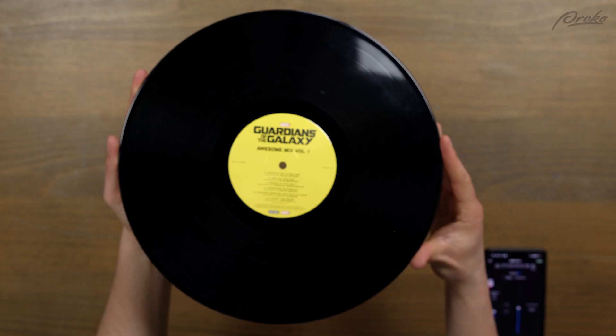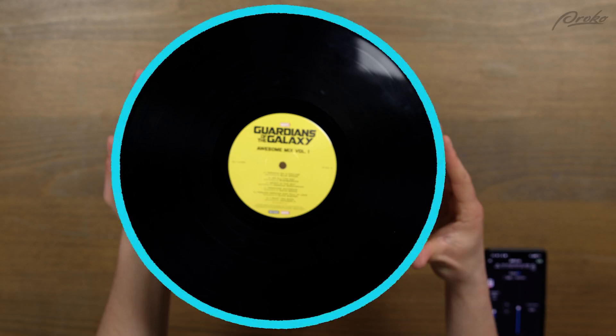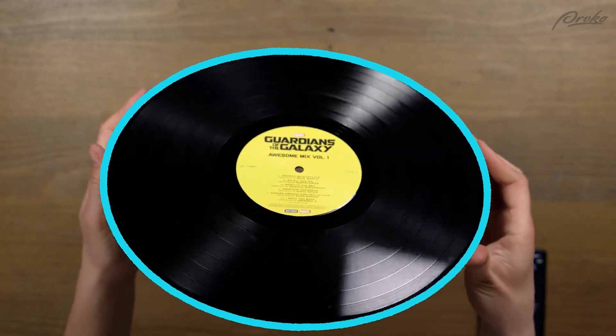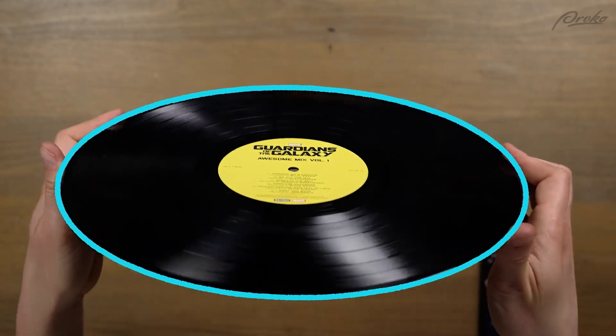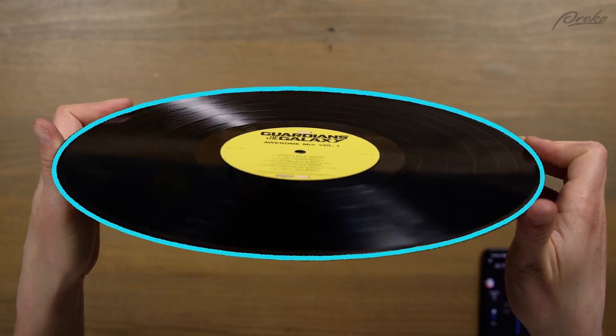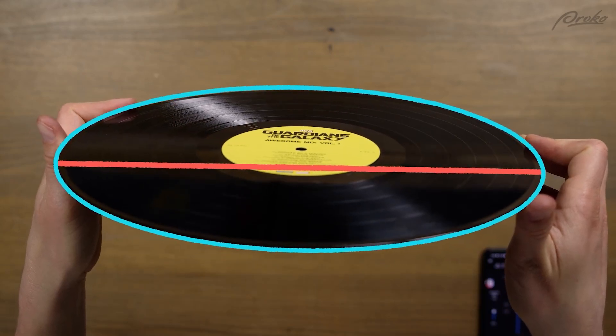When I look at this record from straight on, we see a perfect circle and the axes cross right in the middle. When I tilt the record, the circle becomes an ellipse. But watch what happens to the long axis. It doesn't cross the center of the record?